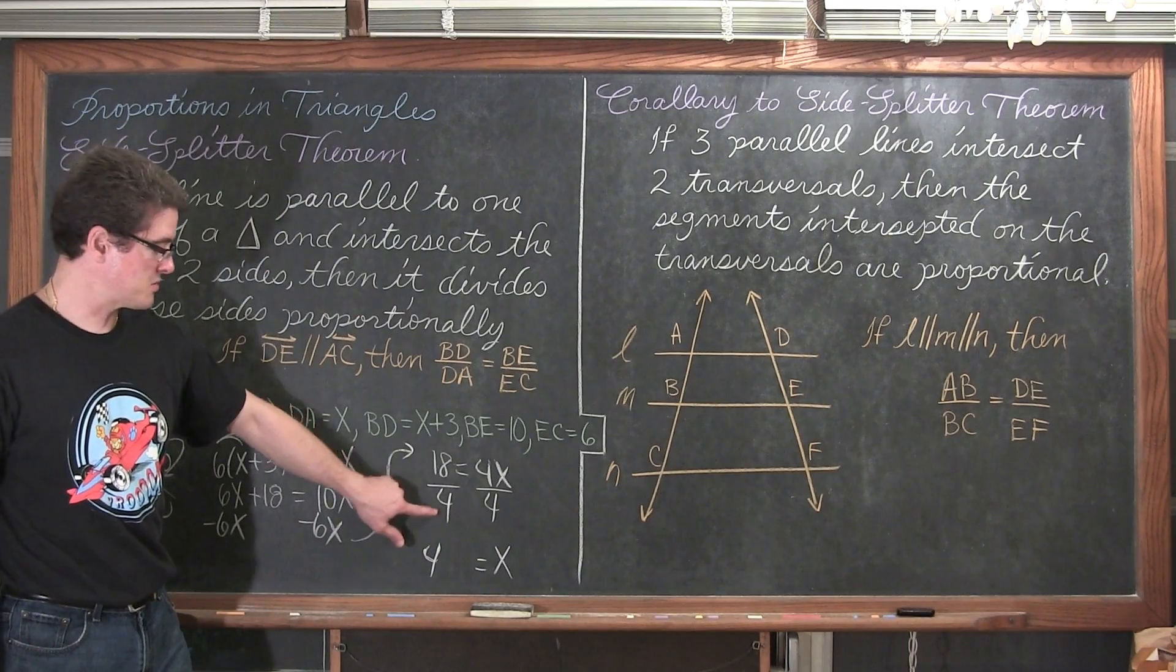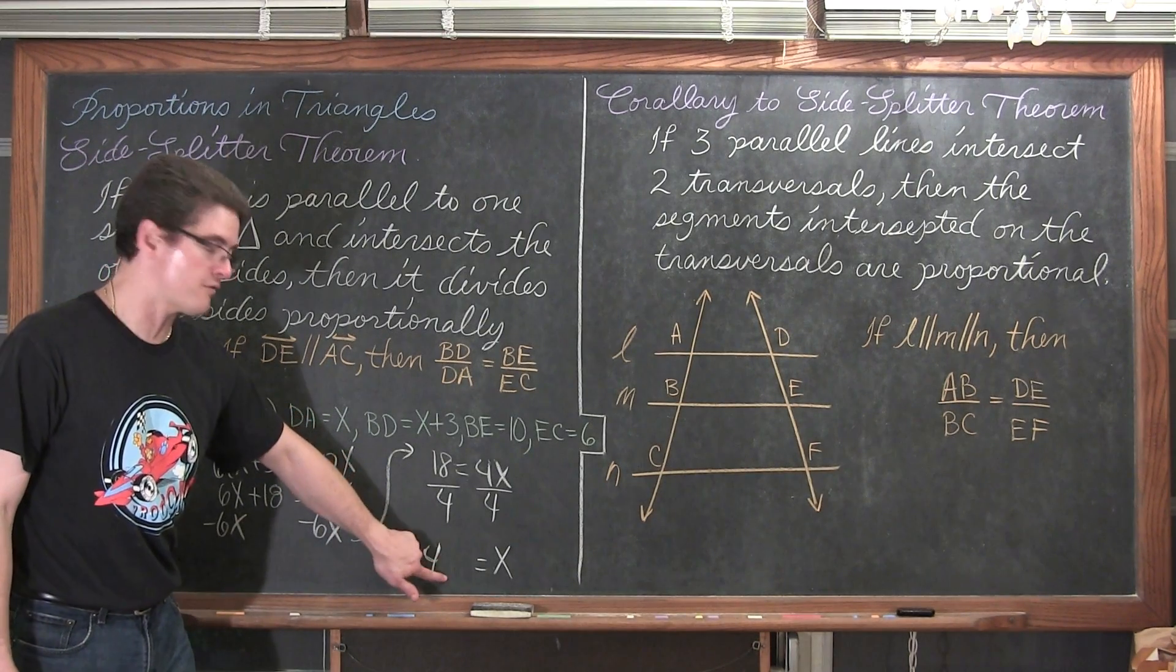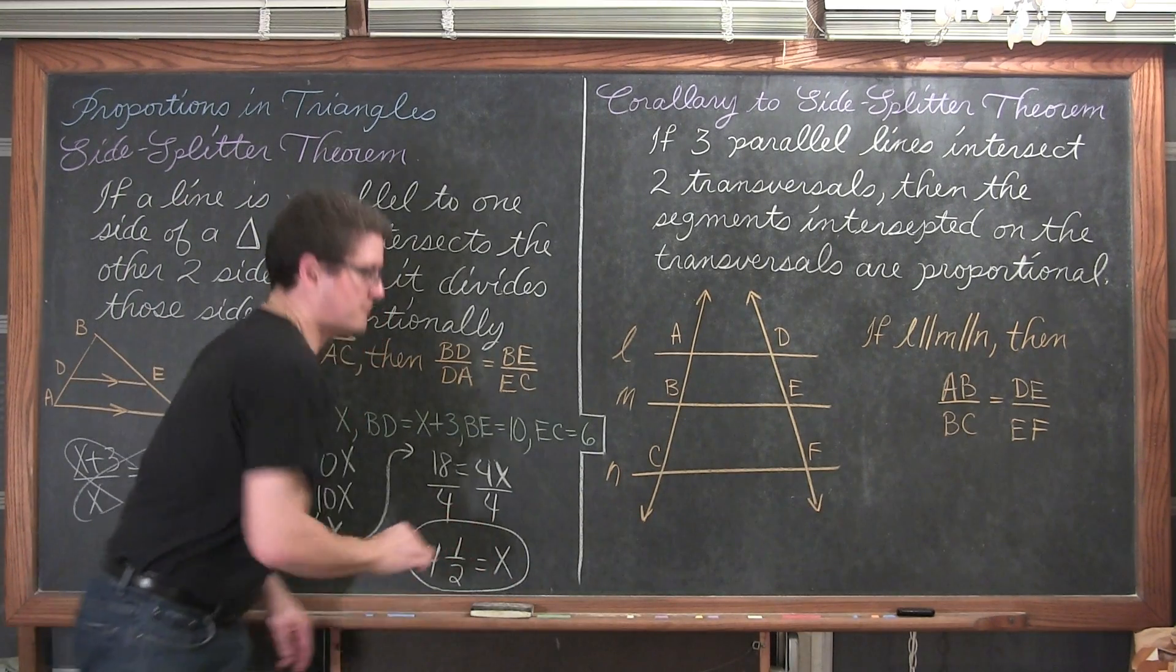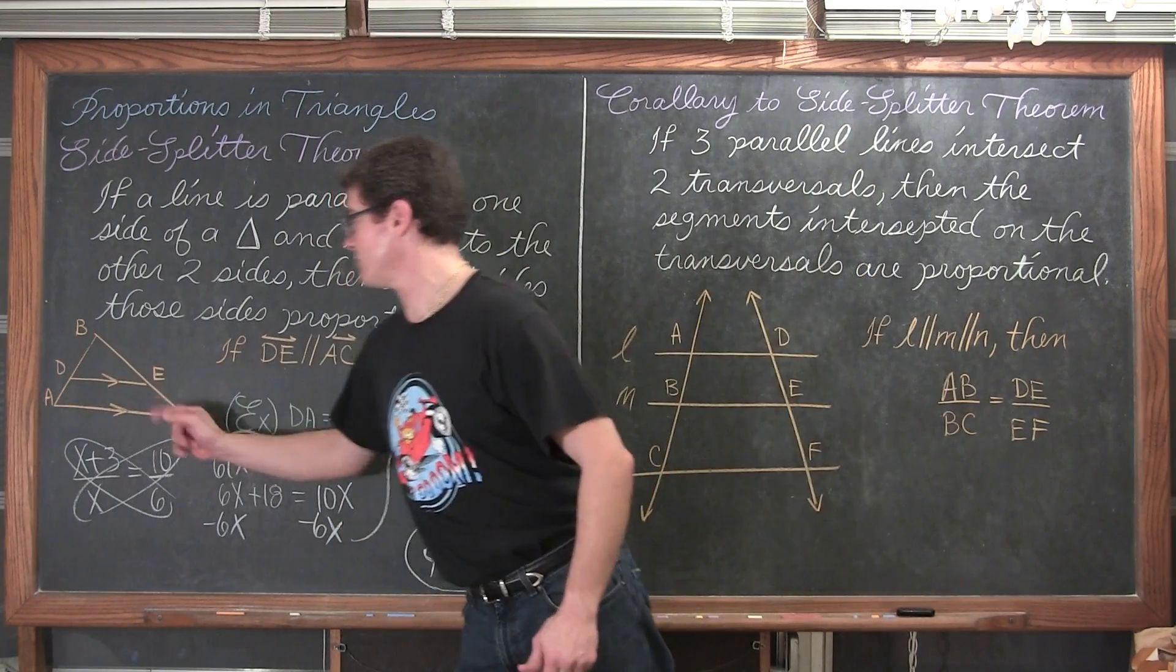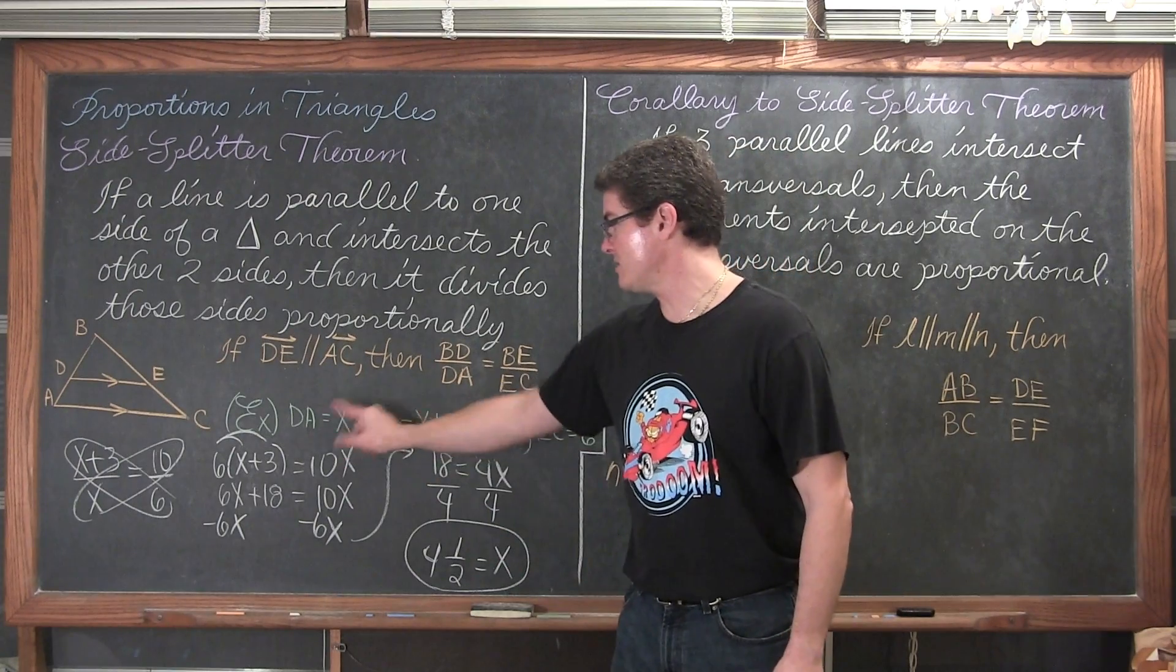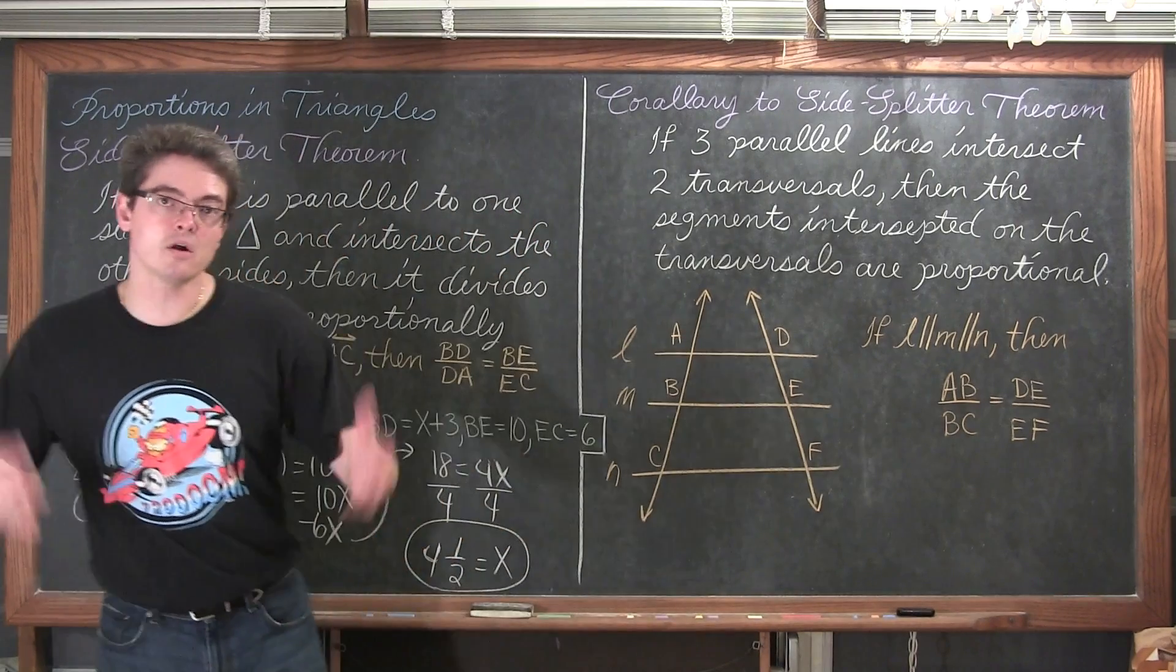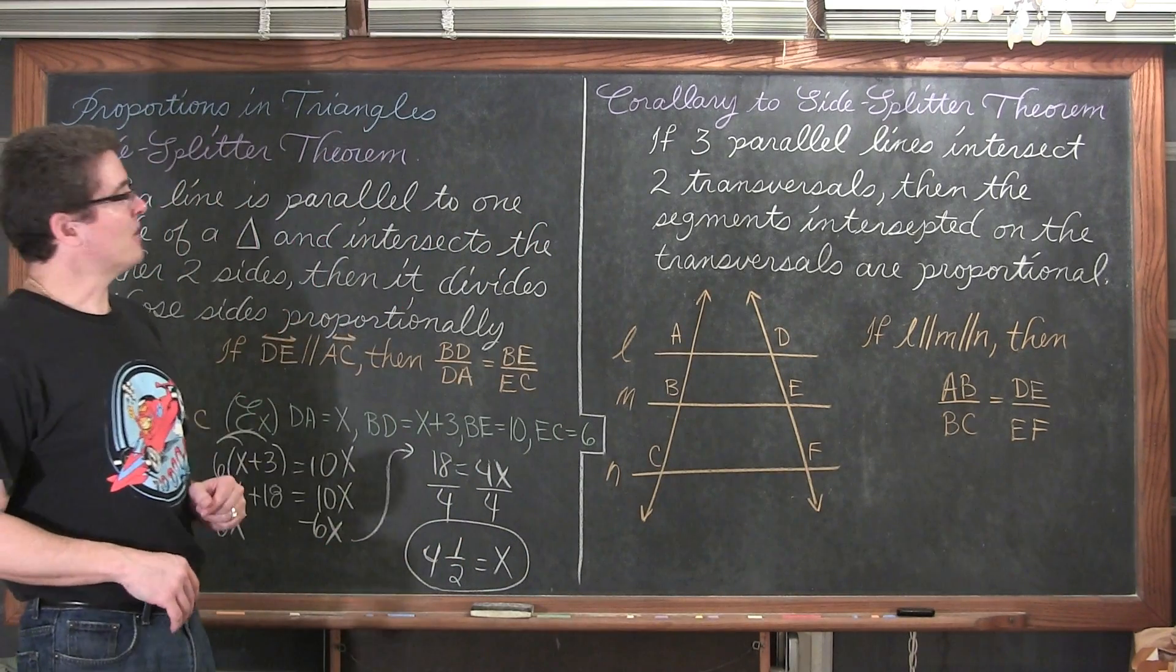And we are going to get 18 equals 4x. I am going to divide by 4 and get x. Instead of reducing this, let's just go right to a mixed fraction. How many 4's can you pull, values of 4 can you put into 18? 4. 4 times 4 is 16. So, if 4 times 4 is 16, that is going to give me a remainder of 2. But, I am dividing by 4. So, it is really 4 and remainder of 2 over 4. Well, 2 over 4 reduces down to 1 half. And, if all we are looking for is the value of x, then we are done.